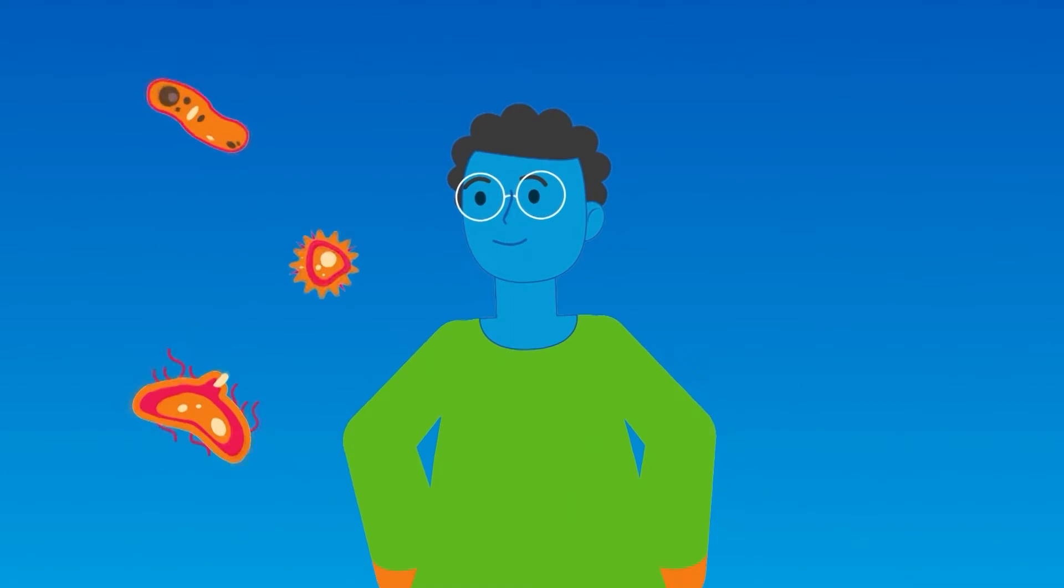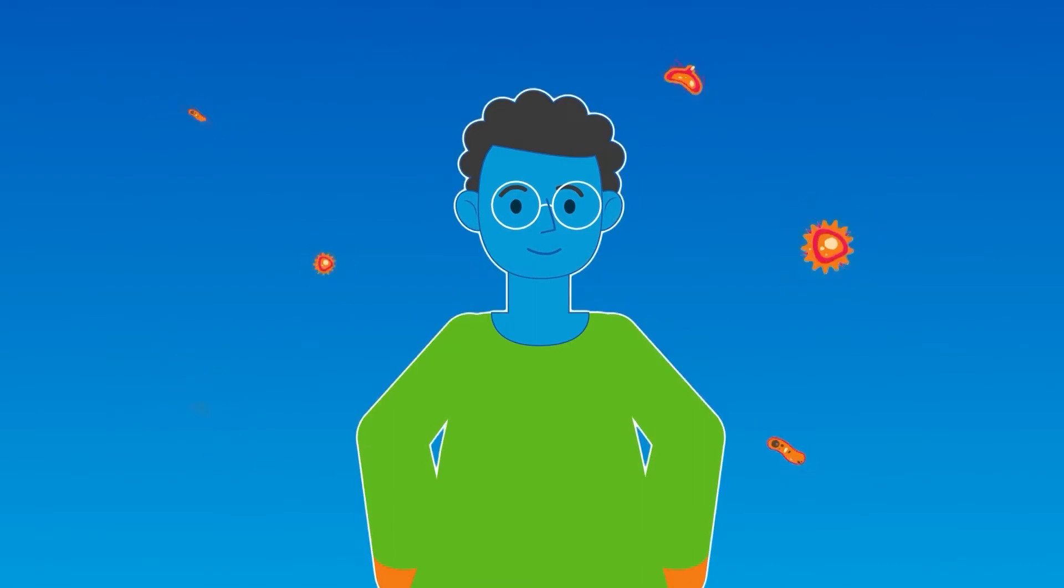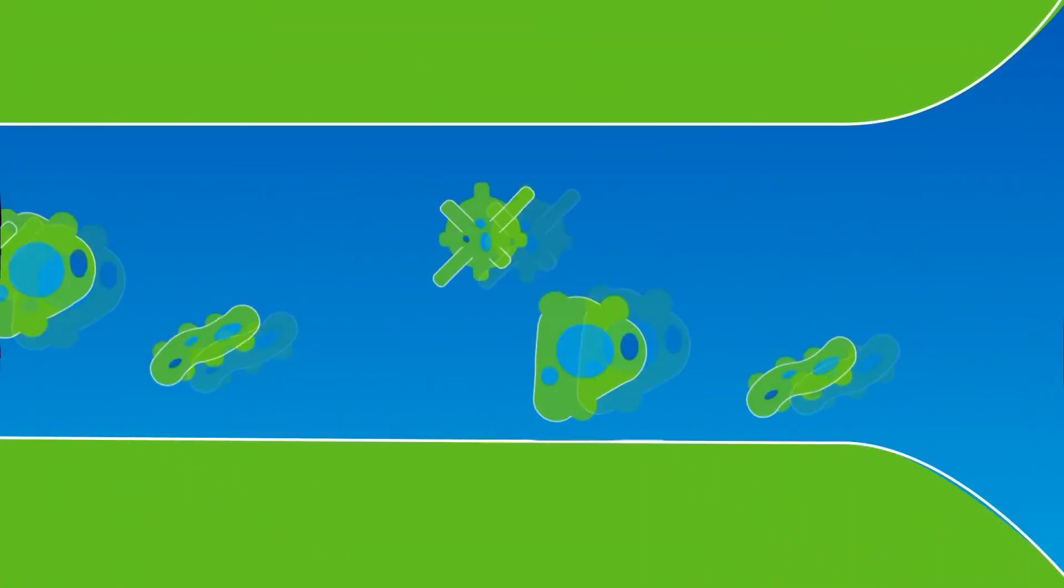It all starts with the immune system, which protects us from viruses and other things that might harm us or make us sick. Our immune systems include things we can see, like our skin, and things we can't, like blood cells and antibodies.